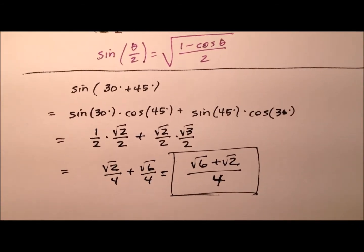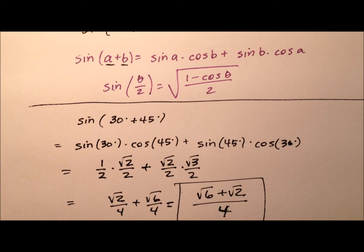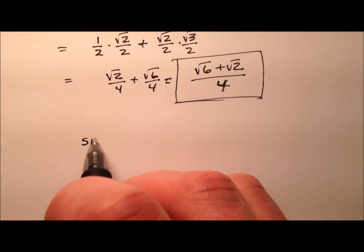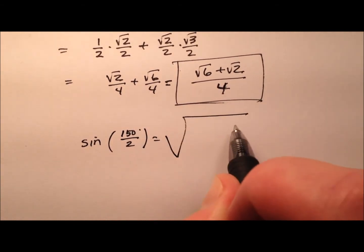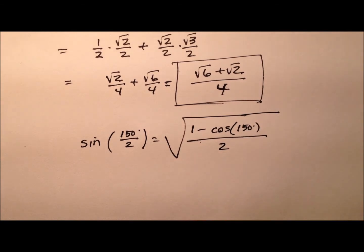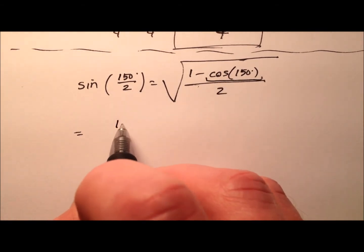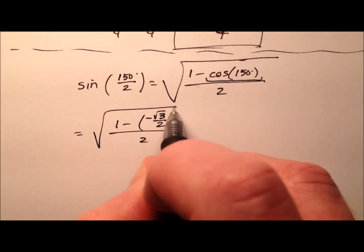Now let's do it a second way using the half angle identity. The sine of theta over 2 equals the formula: the square root of (1 minus cosine theta) over 2. In this case, our theta needs to be twice 75, so 150 degrees. So the sine of 150 degrees divided by 2 equals the square root of 1 minus the cosine of 150 degrees, all divided by 2. The cosine of 150 degrees is negative square root of 3 over 2, and all of that is over 2, under a square root.